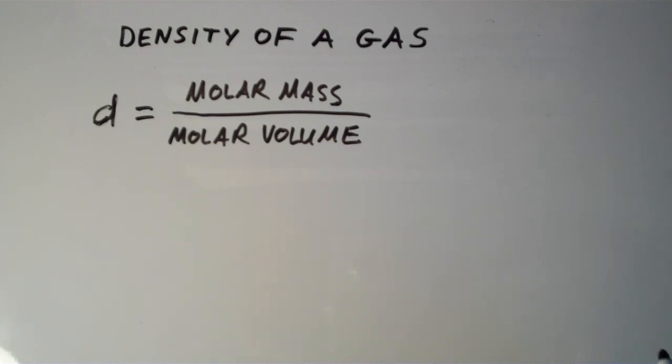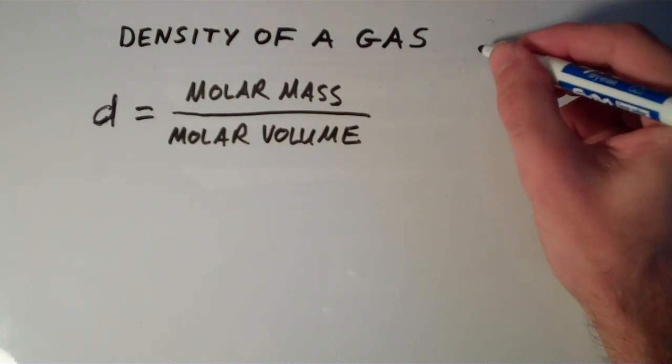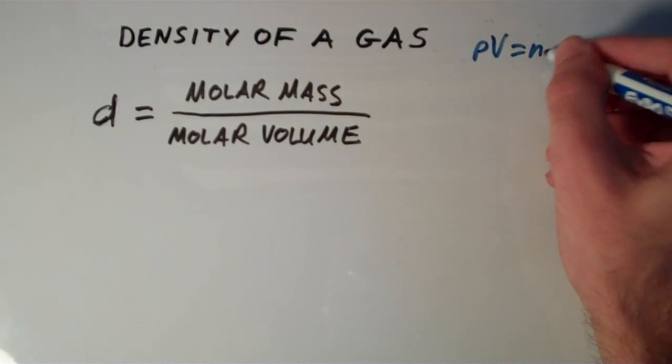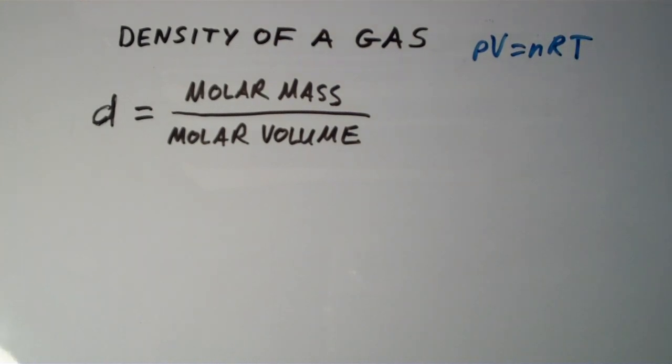In addition to the molar volume of a gas, the density of a gas is also one of those properties that the ideal gas law, which is PV equals nRT, can be used to find.